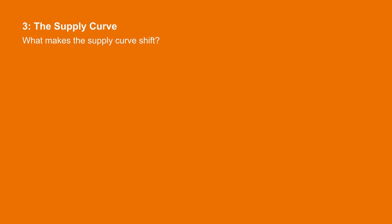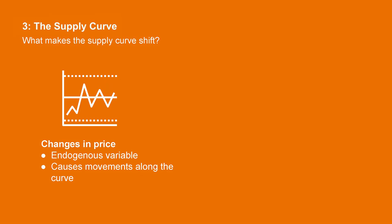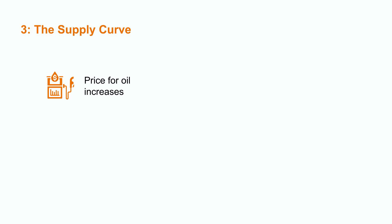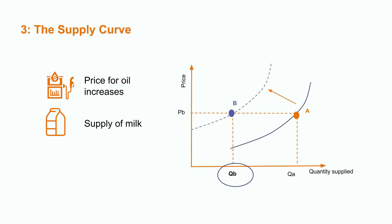So what makes the supply curve shift? Mainly changes in input prices and capacity of technology — these are exogenous variables. For example, increasing wages or oil prices. Let's imagine that the price for oil increases and we are analyzing the supply for milk. At first it may seem that oil has nothing to do with milk. However, suppliers need oil for transportation and distribution — oil is an input price for milk. This will cause the supply curve to shift to the left, meaning that at the same price, the quantity supplied will be lower, represented by QB.